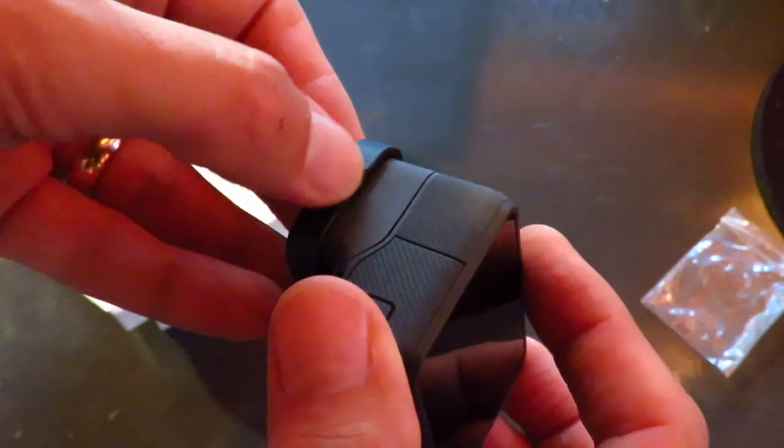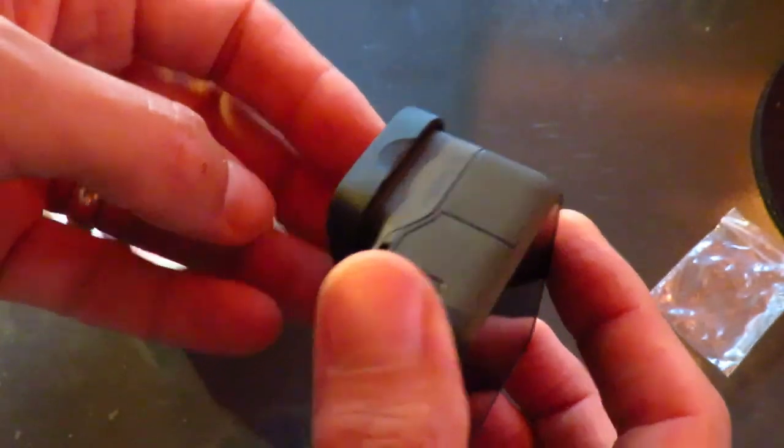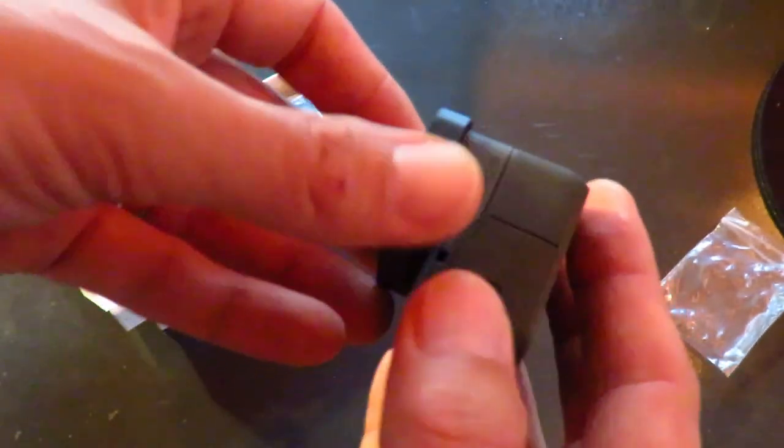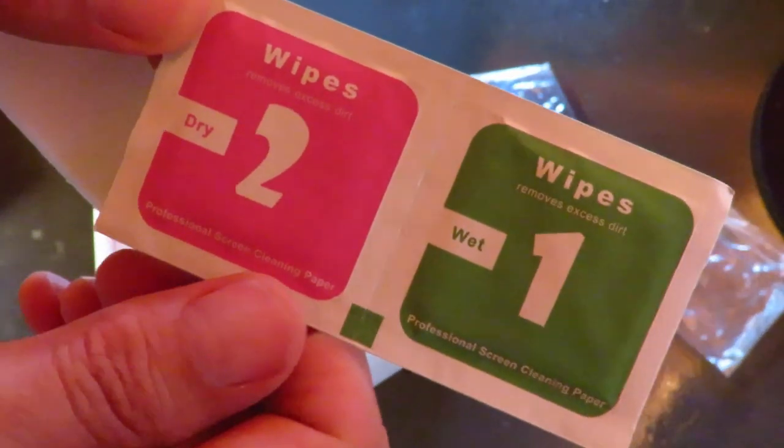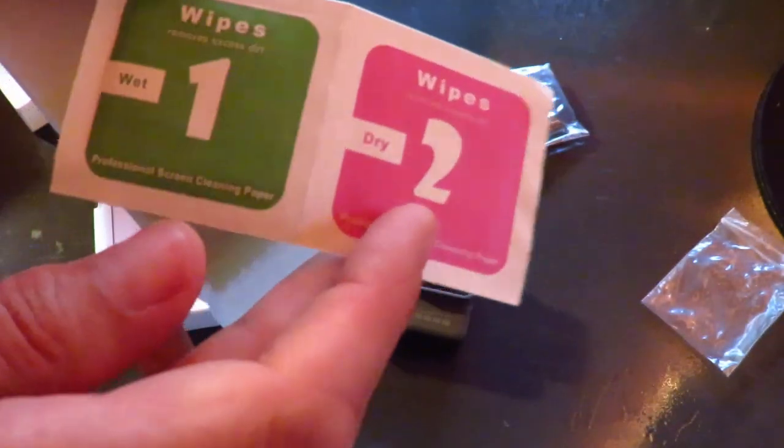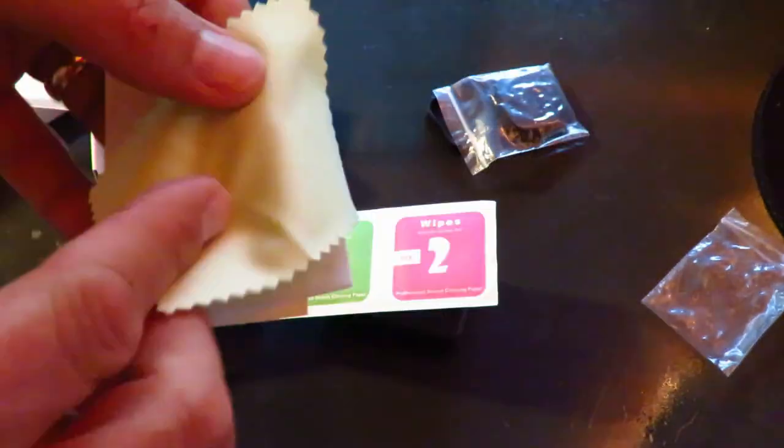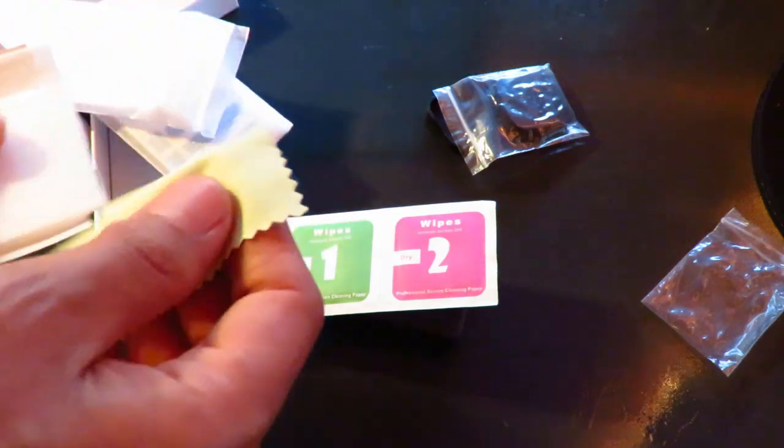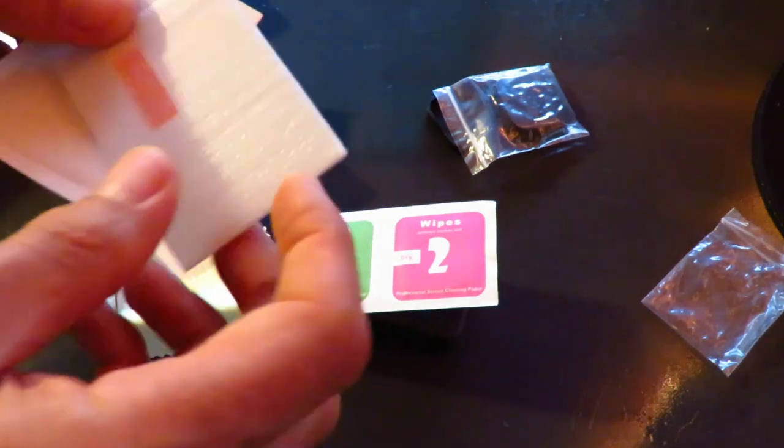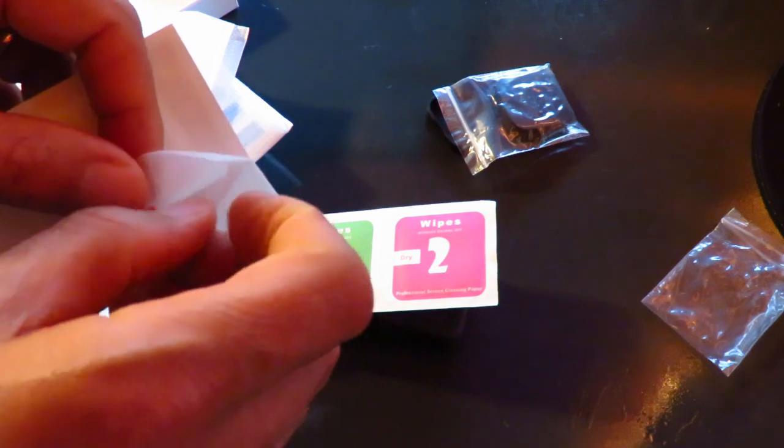And there's a nice kind of—do you call it a bevel or a bezel—to lift it off. And then wipes, a wet wipe and a dry wipe with a funky font. And then you get the cloth, so you get a cloth and a wipe, which is nice. It's all very well wrapped.